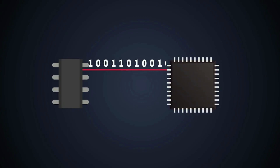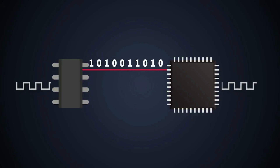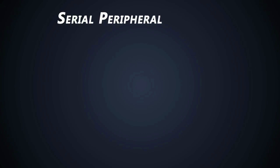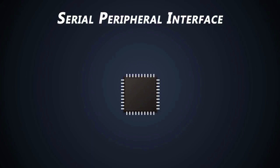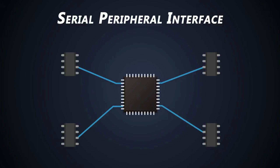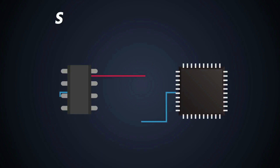We use serial communications in electronics embedded systems to transfer data from one electronics device to another. It is one of the standard and most popular communications protocols. Serial Peripheral Interface is one of the most widely used interfaces between microcontrollers and peripherals such as sensors, ADC, DAC, shift registers, and many more. SPI communication is a synchronous type of communications protocol.